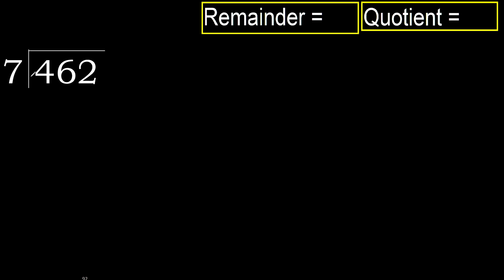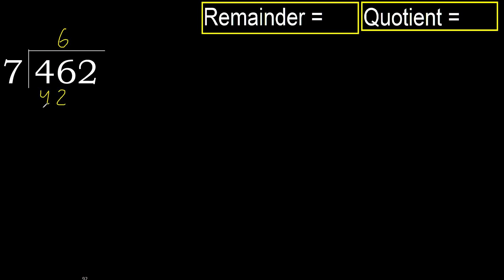462 divided by 7. 4 is less, therefore next: 46. 46 is not less, therefore with 46 — 7 multiplied by which number is nearest to 46 but not greater? 7 multiplied by 7 is 49, which is greater. Multiply by 6: 42 is not greater. Subtract: 46 minus 42 is 4. Next: 42.